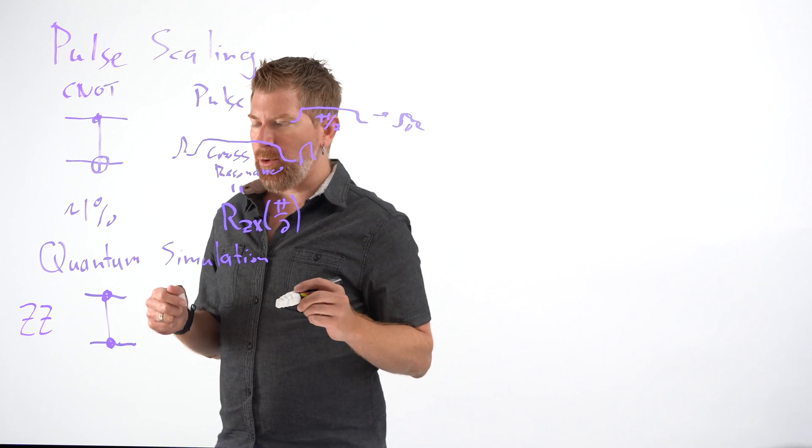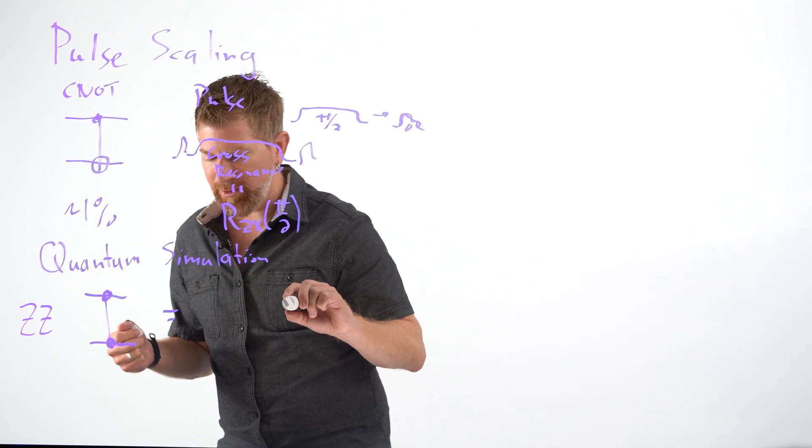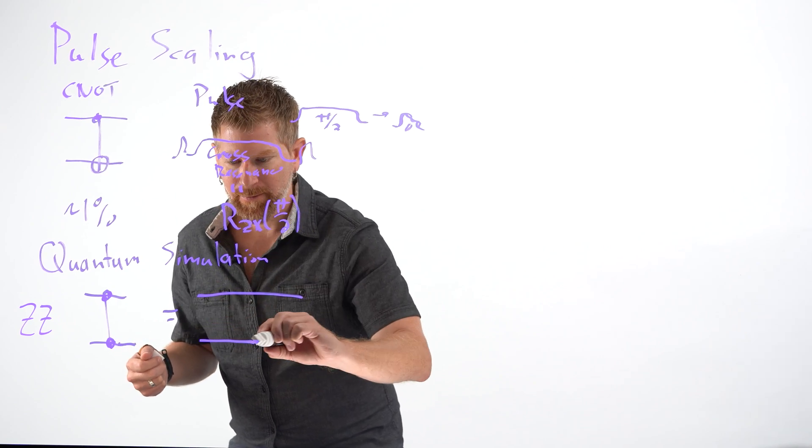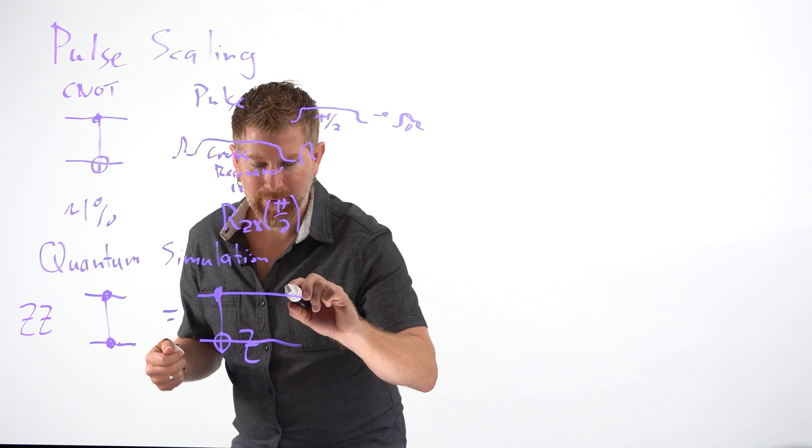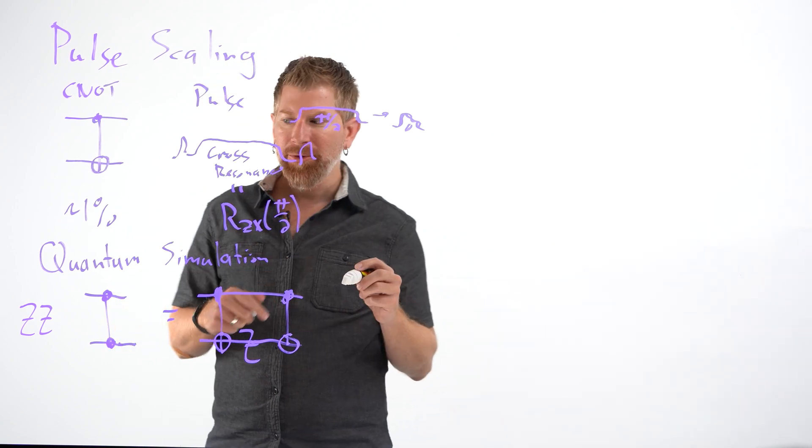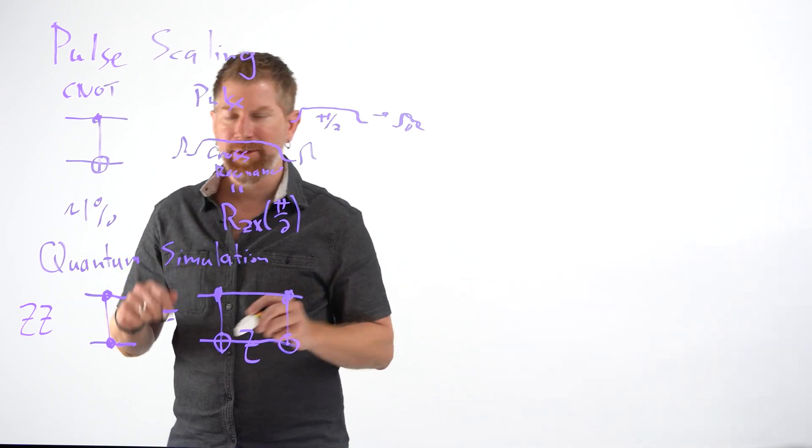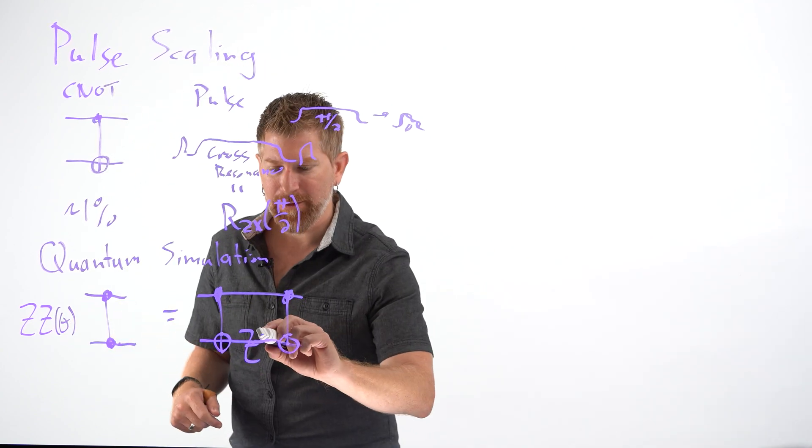If you want to map this onto a quantum computing hardware that has CNOTs, then you would say that this is equal to a CNOT, a Z gate, and a CNOT. Now the thing I haven't told you about this is most of the times these things have angles on them, and that means this Z has an angle on it too.